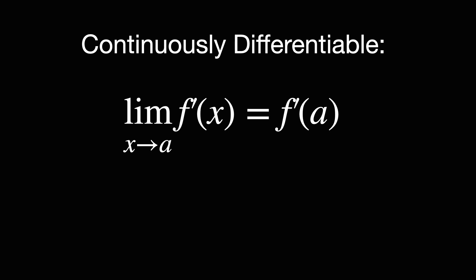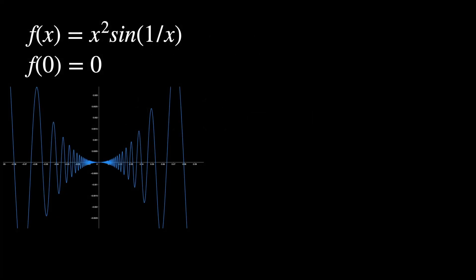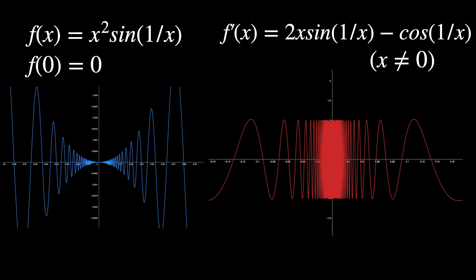But, as a few people pointed out, there are functions, like this bad boy over here, x squared sine of 1 over x, whose derivative at 0 exists using the standard definition, but the limit as x approaches 0 of the derivative does not. So yes, that was an oversight on my part. But that brings us to the big picture.